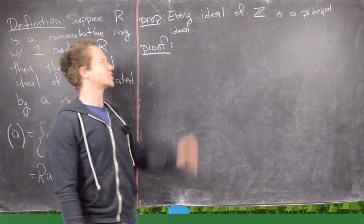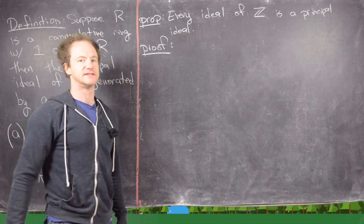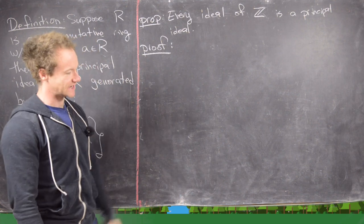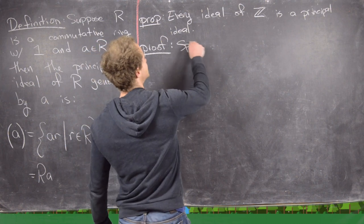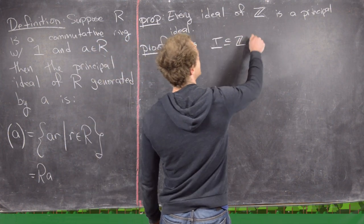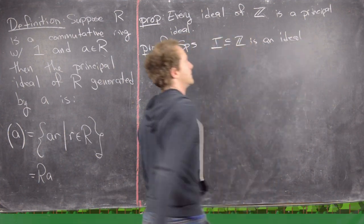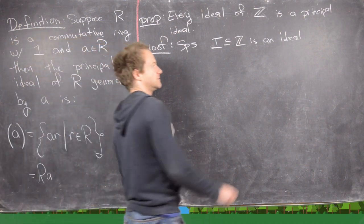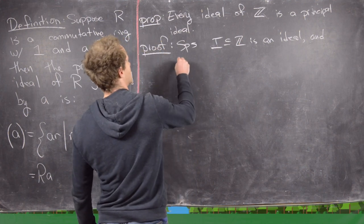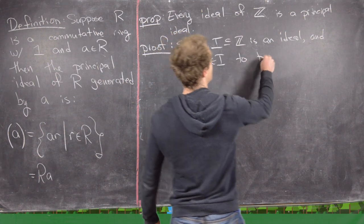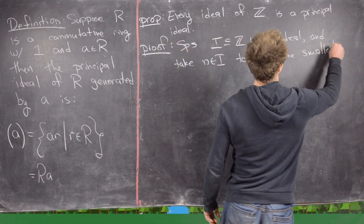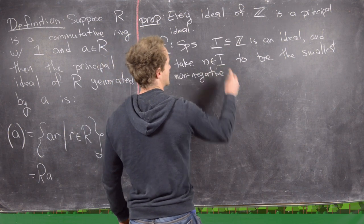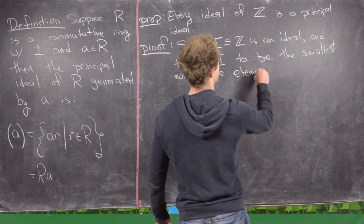To finish, we're going to show that every ideal of Z is a principal ideal, which makes Z a principal ideal domain. We'll explore principal ideal domains more thoroughly later, but this is a nice introduction. Suppose I in Z is an ideal. We want to take N in the ideal to be the smallest non-negative element.